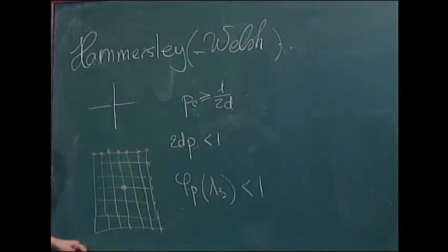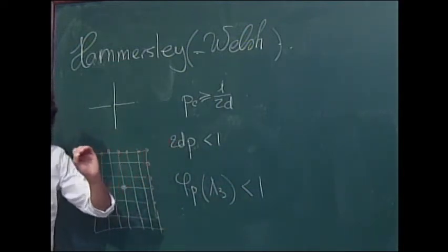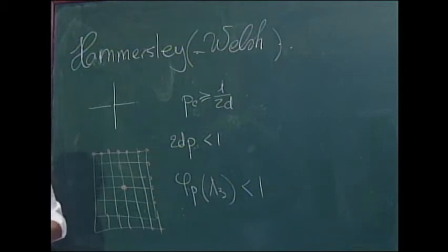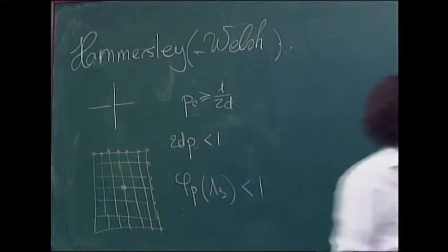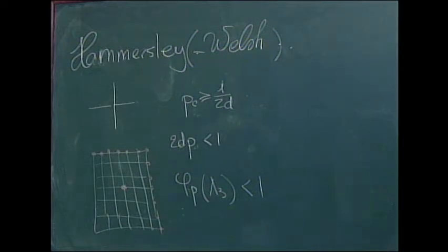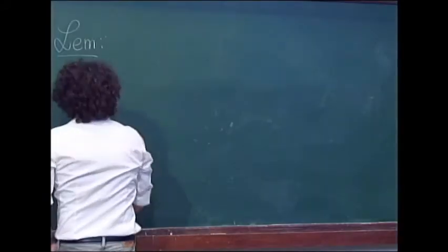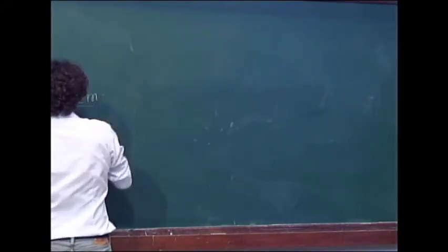What they prove is that if this φ_p of the box of size 3 is strictly smaller than 1, then in fact you are subcritical. I will explain the argument in a more general framework. You can believe that the set of p for which φ_p(Λ_3) < 1 is going to be bigger than the set of p for which 2D·p < 1. So they get a better lower bound, basically. That was the original idea — one of the very first papers on percolation theory. And funnily enough, this idea is really at the core of the proof I'm going to present to you, which gives a very simple proof of this result.